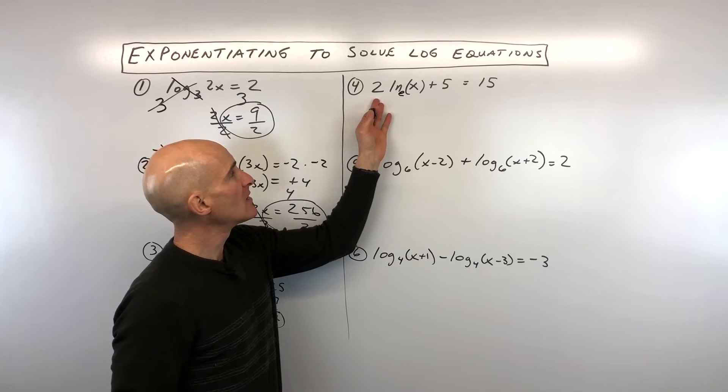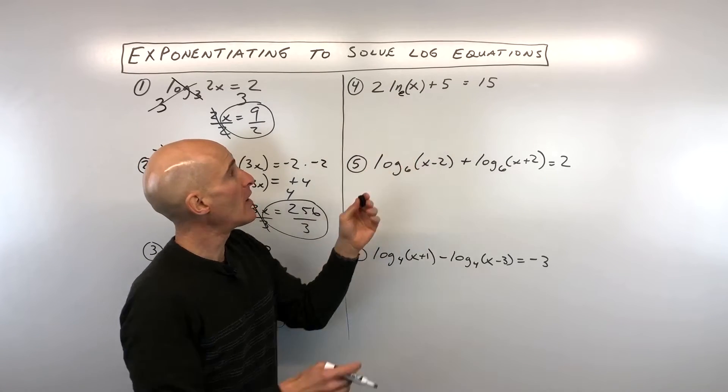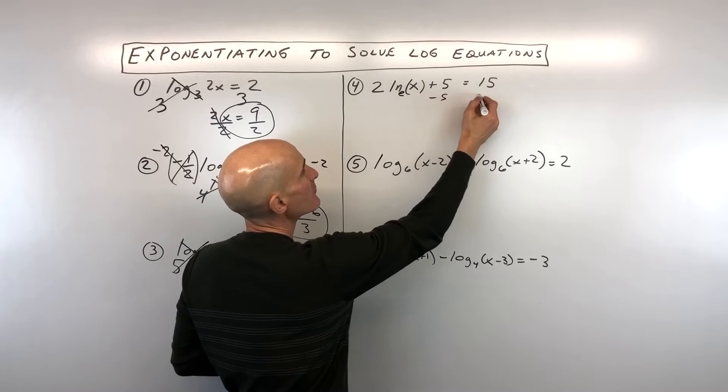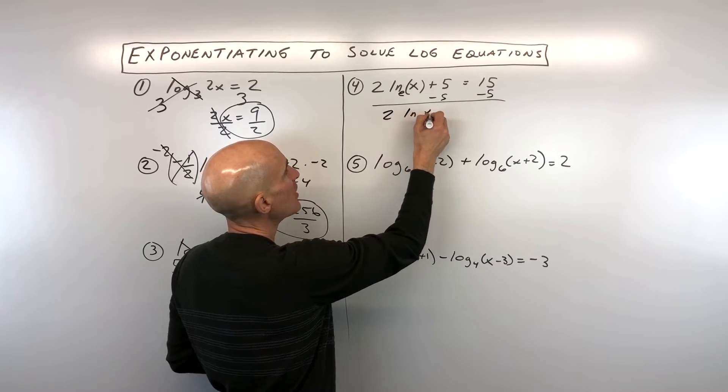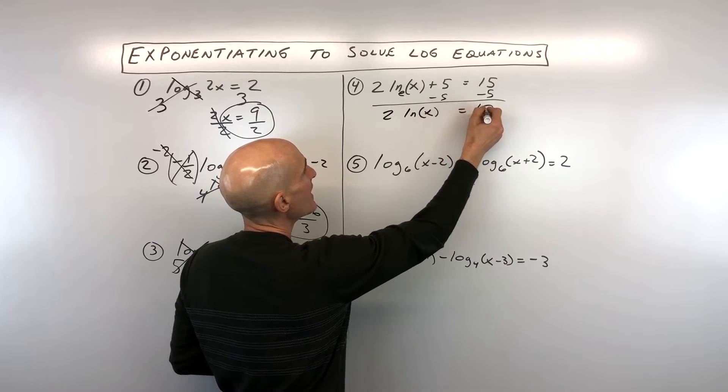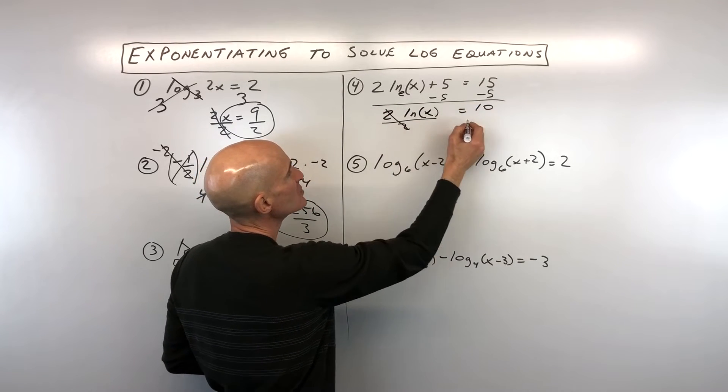So how do I get the natural log by itself? Well, again, working from the outside in, we want to subtract 5 from both sides. So now we're down to 2 natural log of x equals 10. We're going to then get rid of this 2 by dividing both sides by 2.